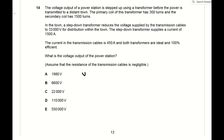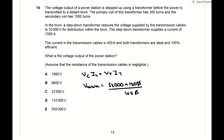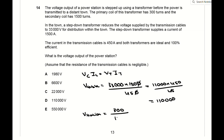For question 14, both transformers are ideal and 100% efficient, so power in the cables equals power delivered to the town: Vc·Ic = Vt·It. Rearranging gives the cable voltage as 110,000 V. At the power station the primary coil has 300 turns and the secondary has 1500 turns, so using Vp/Vs = Np/Ns, the station voltage is (300/1500) × 110,000 = 22,000 V, which is C.